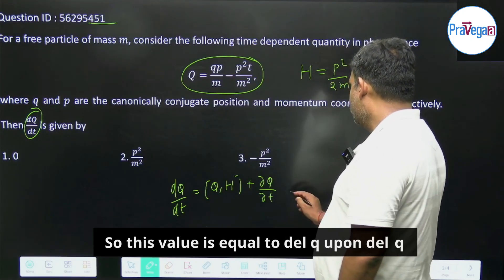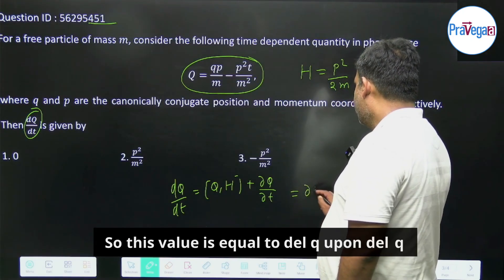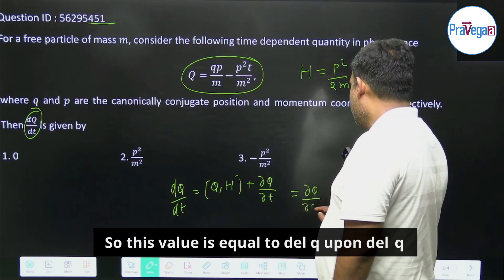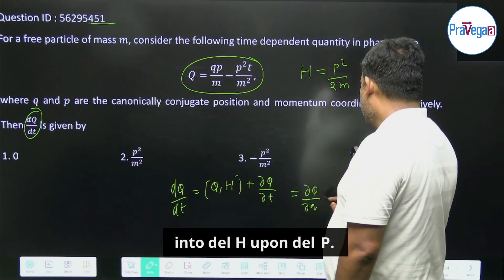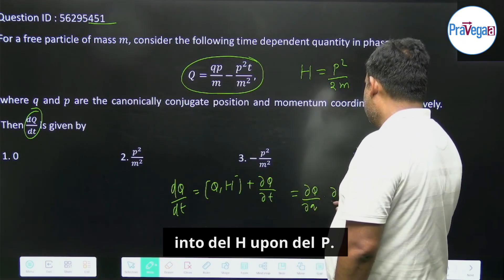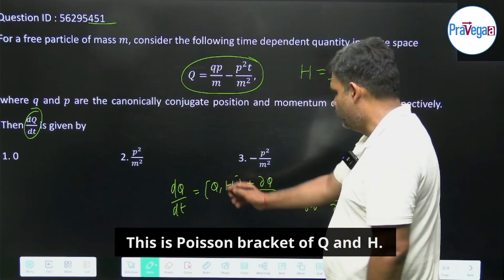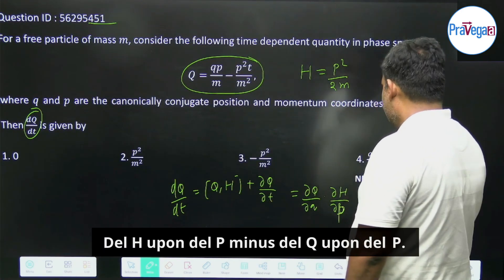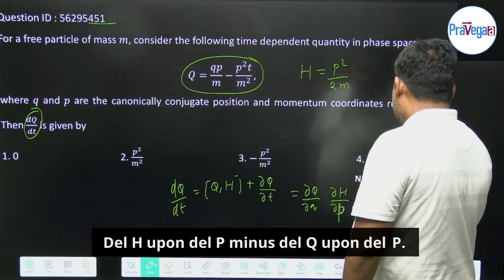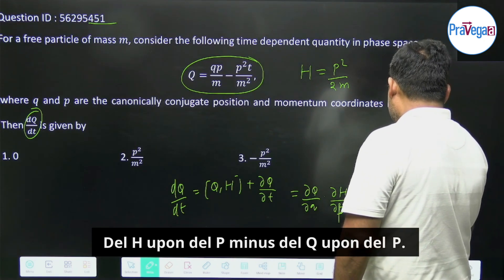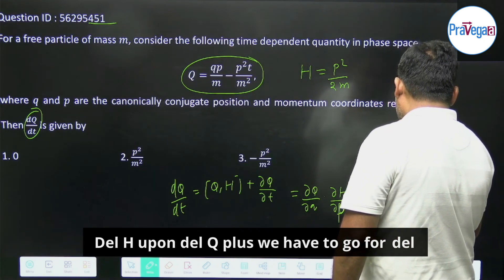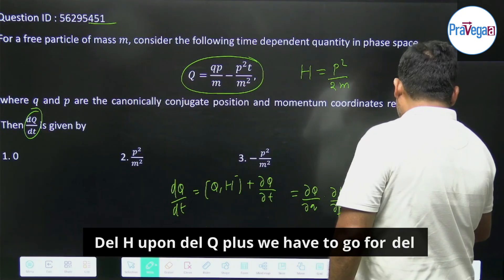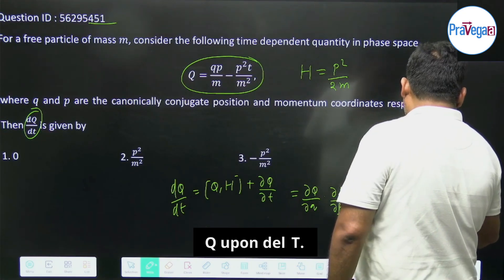So what is this value? This value is equal to del Q upon del q into del H upon del p. This is Poisson bracket of Q and H. Del H upon del p minus del H upon del q into del Q upon del p plus we have to go for del Q upon del t.